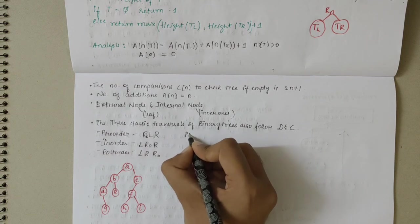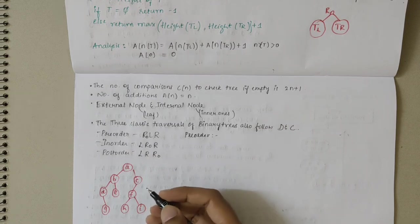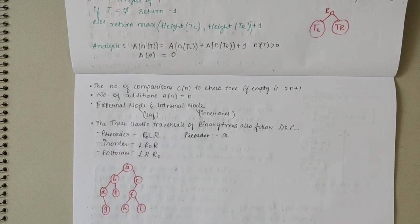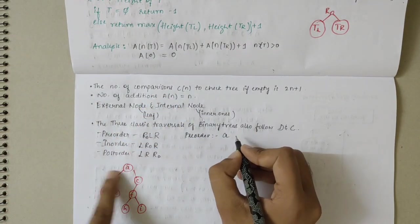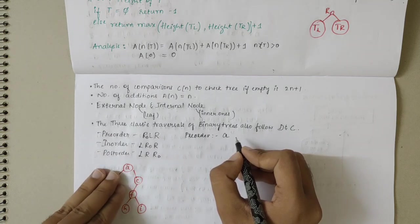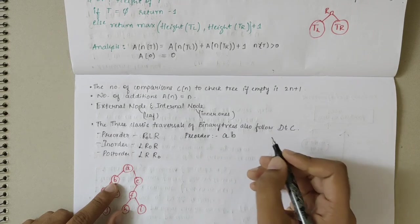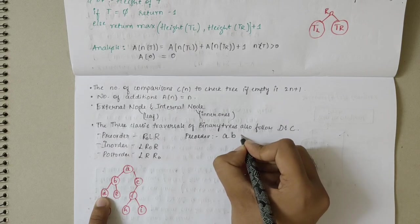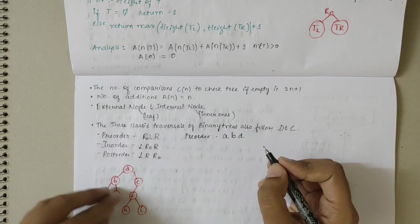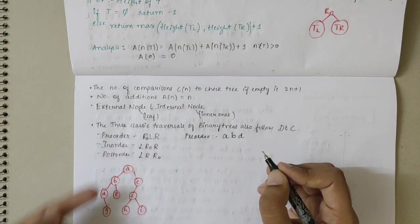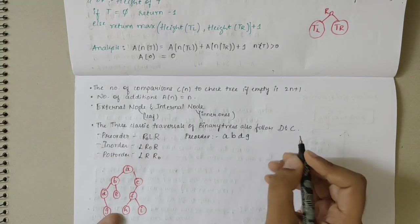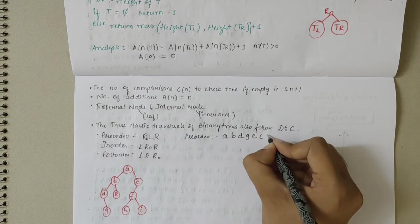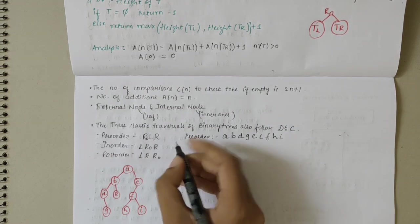Starting with preorder (Root-Left-Right): the root node A is written first. Then looking at the left subtree, the root is B, so we write B. Under B, the left child D has no left child but has right child G, so we write D, then G. Moving to the right subtree of A, the root is C, and C has child F with children H and I, giving us C, F, H, I. So preorder traversal gives: A, B, D, G, C, F, H, I.